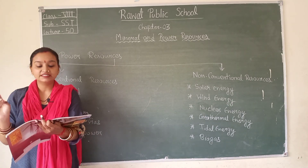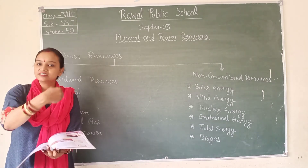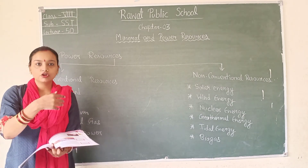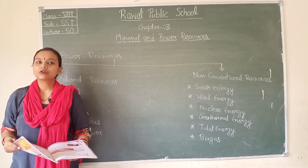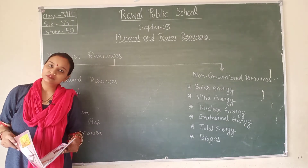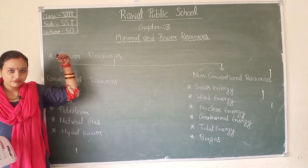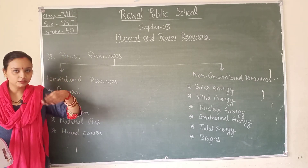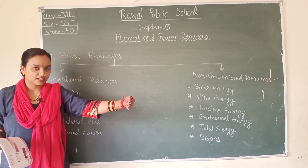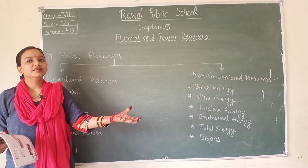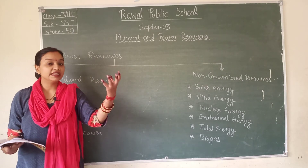The moving blades turn the generator. The generator turns on to produce electricity. Water energy is thus converted into electrical energy through the turbines and generator. This process is known as hydroelectric power.